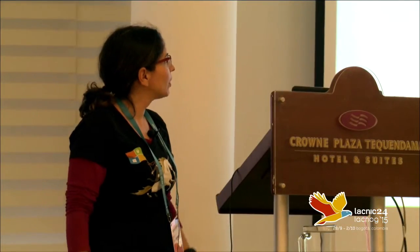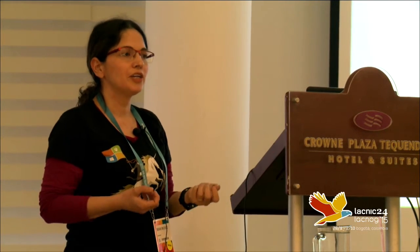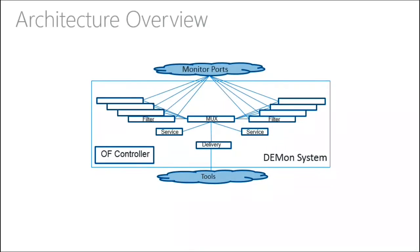This is what it looks like. All the monitor ports connect to what we call the filters — the filters are simply the aggregations for the taps. Then we have the mux, which is where we send all the traffic from the different filter layers. To the muxes, we have the service layers connected — these are our very expensive devices. And instead of having hundreds of very expensive devices, we can now build data centers with only four or six of those very expensive devices. Then we have the delivery layer, and everything is done with the OpenFlow controller.